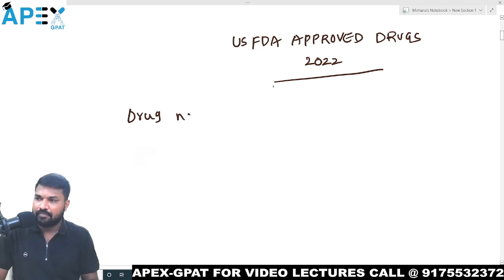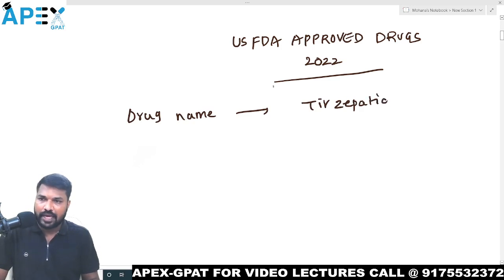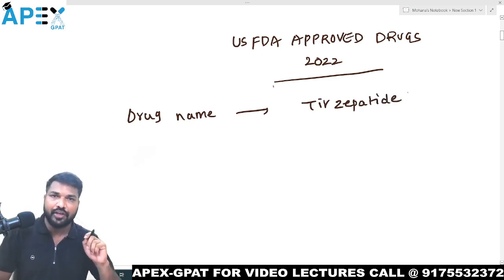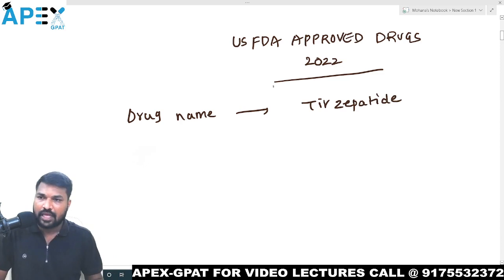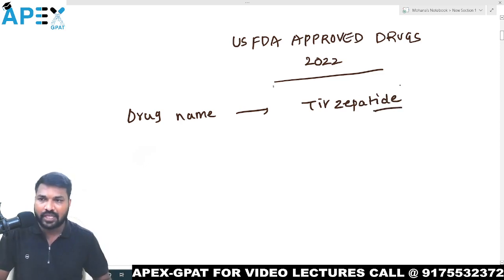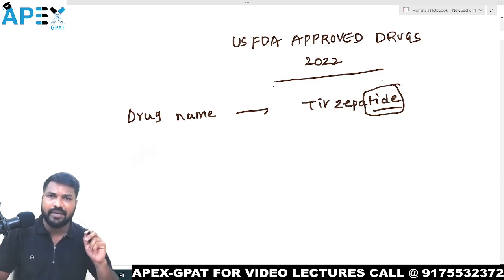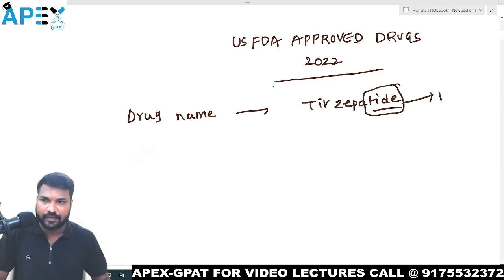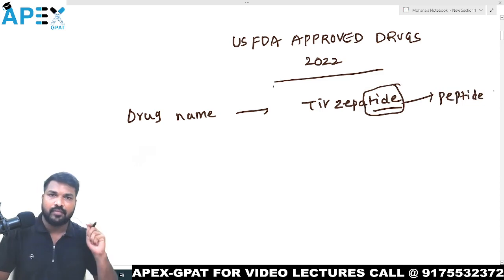The first drug name is Tirzepatide. Did you observe one thing? The last four letters — we have TIDE. TIDE means it is a peptide. So this drug is a peptide.